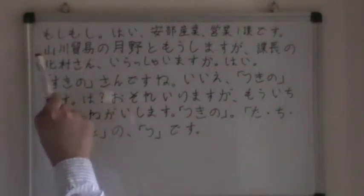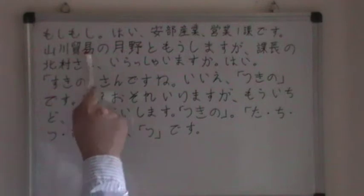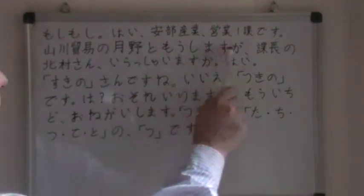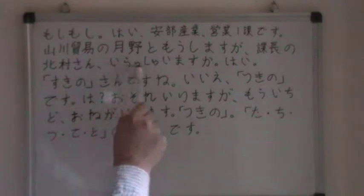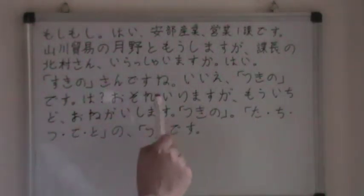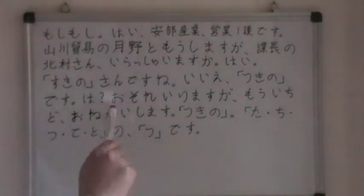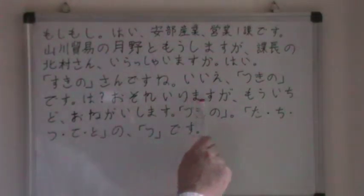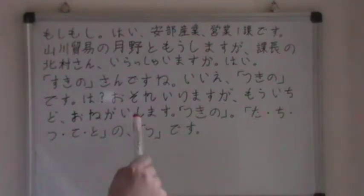はい。安倍産業、営業一課です。山川貿易の月野と申しますが、課長の北村さんいらっしゃいますか? はい。月野さんですね。いいえ、月野です。は? 恐れ入りますが、もう一度お願いします。Tsuki no — tachitsuteto-no tsu desu.